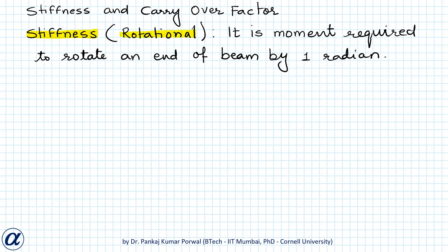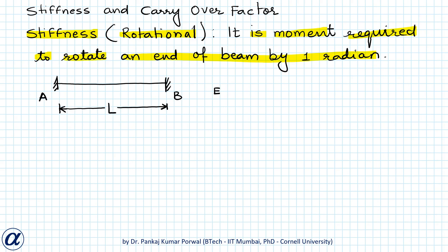Stiffness or rotational stiffness is the moment required to rotate an end of a beam by one radian. We are normally given a beam with both ends fixed with E and I. To find rotational stiffness at end A, we replace the fixed support at end A by a pin support.